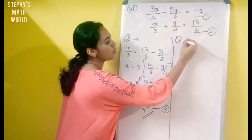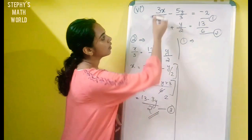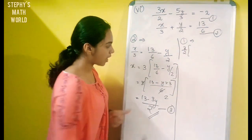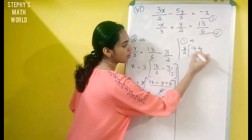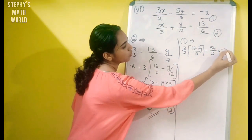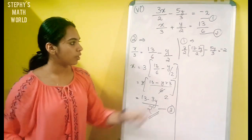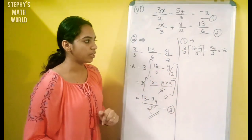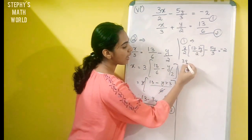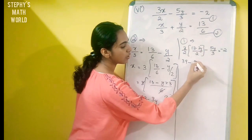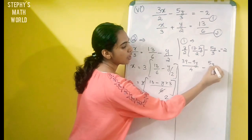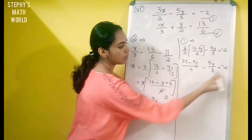Equation 1 implies 3 by 2. The coefficient of x is 3 by 2. The x value is 13 minus 3y by 2, minus 5y by 3 is equal to minus 2. So with the bracket open: 3 into 13 is 39, minus 3 into 3 is 9y, divided by 2 into 2 which is 4. Minus 5y by 3 is equal to minus 2.